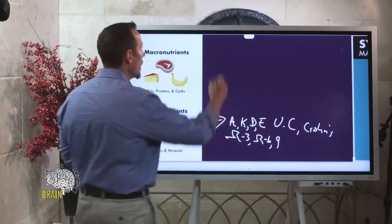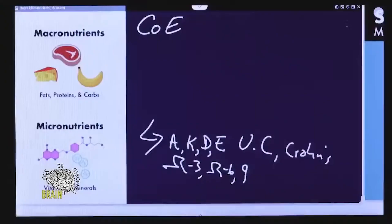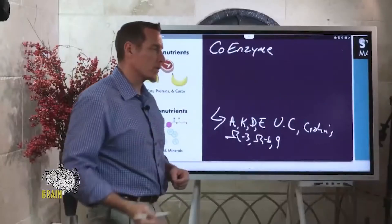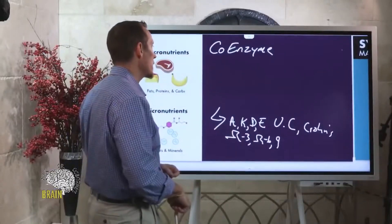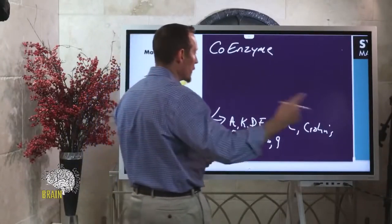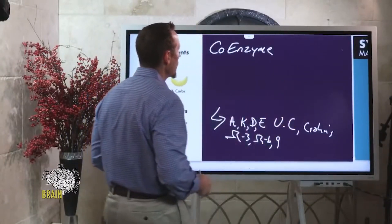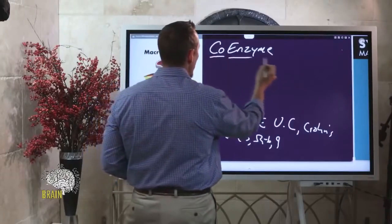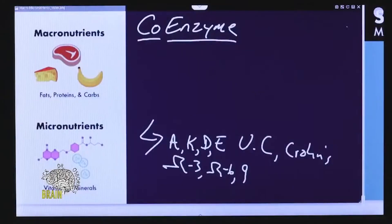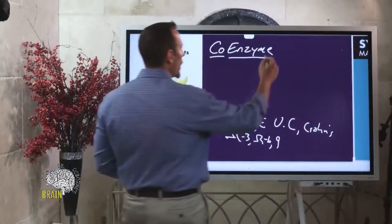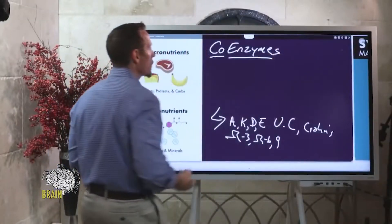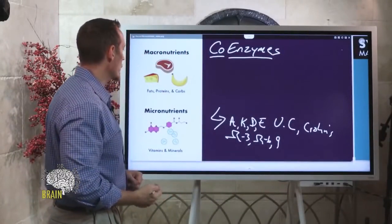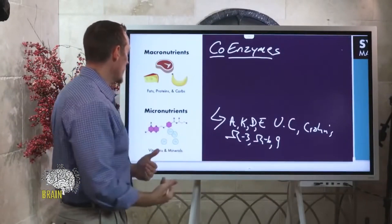Vitamins are oftentimes referred to as co-enzymes. An enzyme is a protein motor that your DNA builds and it usually has a function—some enzymes build hormones, some build proteins, some put protein and fat together to form a new molecule. A coenzyme is like the key that starts the motor. That's what vitamins and minerals are: coenzymes of these little motors produced by your DNA that help your biochemical functions move along.